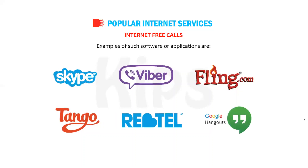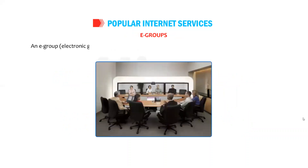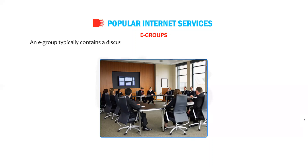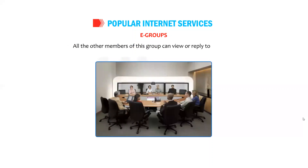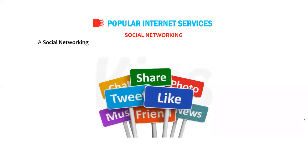An e-group, or electronic group, is a virtual meeting place for individuals who share the same interest. It provides a platform for people to share information on topics of their interest, messages, and photo albums. An e-group typically contains a discussion or message board where members can discuss topics of their choice by posting a message, and all other members of the group can view or reply to this post.